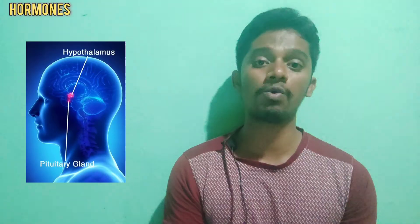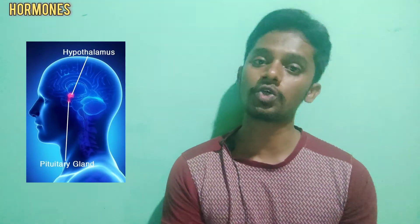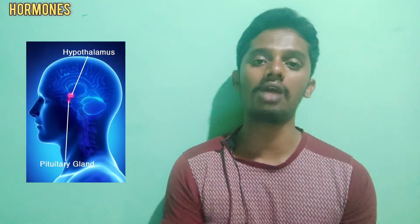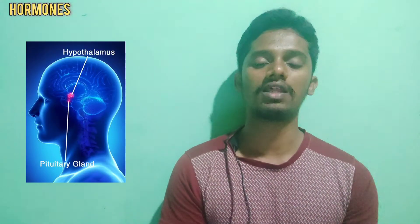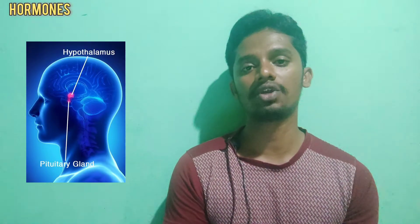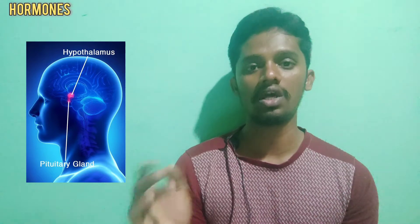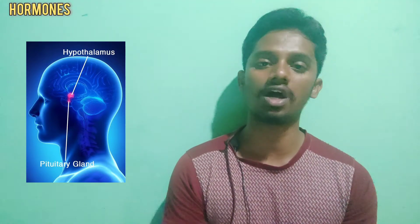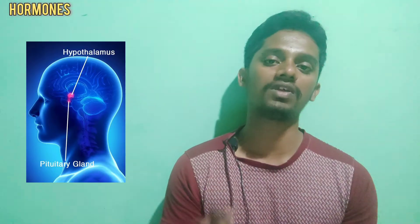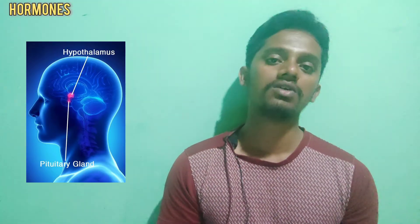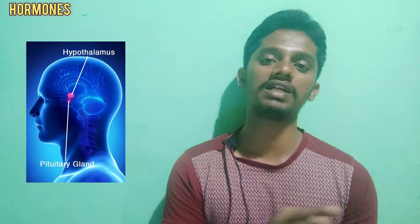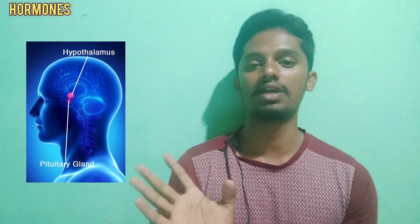In the pituitary gland, most of the hormones are controlled by the hypothalamus. That is why the anterior pituitary releases hormones under the control of hypothalamic hormones. So the pituitary gland is completely controlled by hypothalamic hormones.